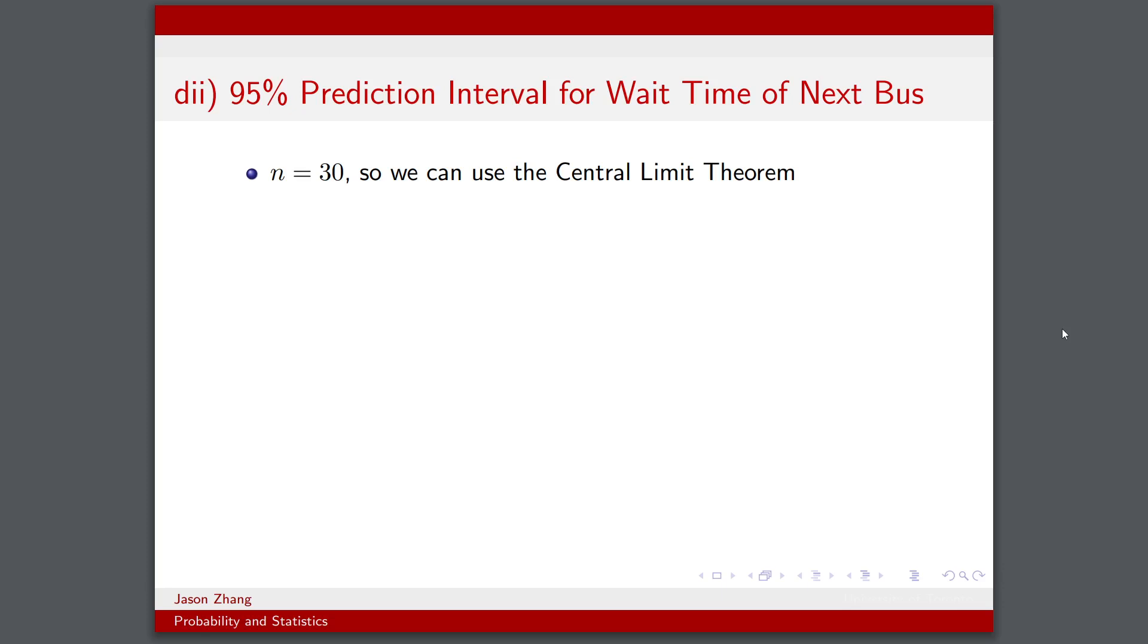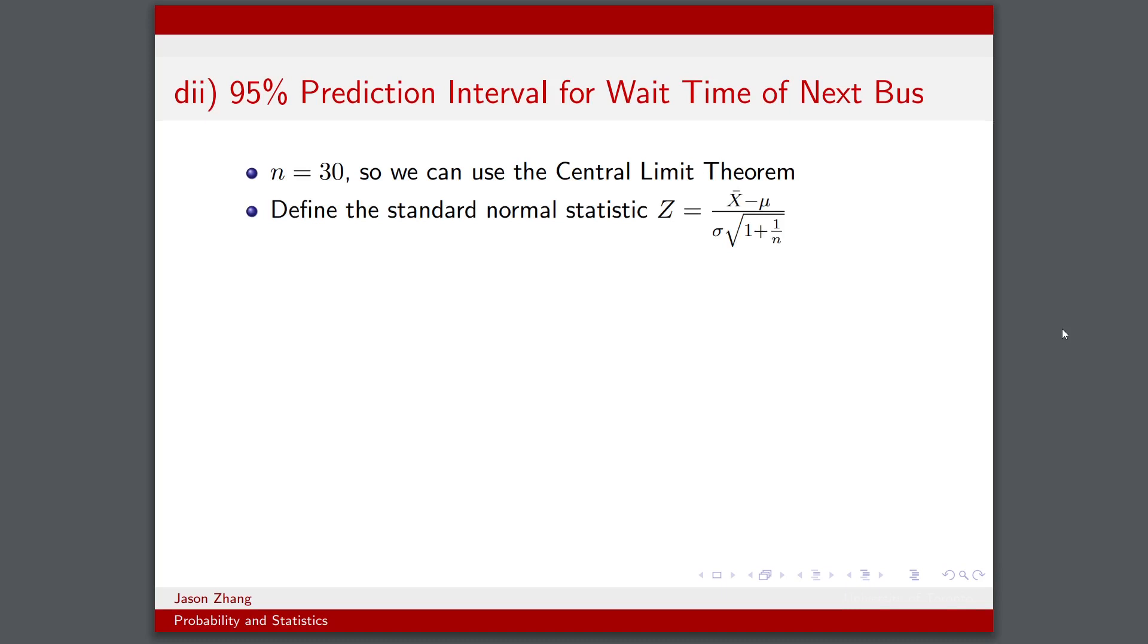Now for part 2, we want to do the same thing, but instead use a prediction interval. We can do all the same stuff, but in our definition of our standard normal statistic, notice how instead of √n in the denominator, we have √(1 + 1/n). This is because when we define a prediction interval, our variance is going to be a lot higher because we also need to care about the variance of the singular data point, which is the next wait time.